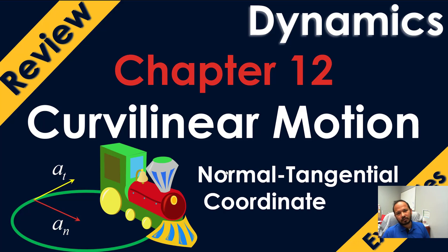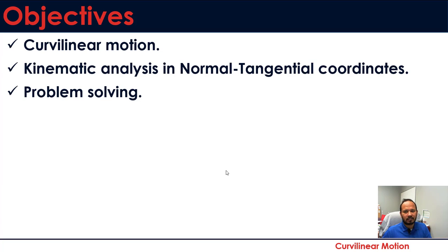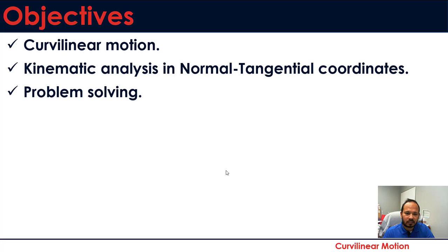Hello friends, today we're going to cover the normal-tangential coordinate system of curvilinear motion analysis. Our learning objective is to perform kinematic analysis using the normal and tangential (NT) coordinate system, understand when to apply it — since we've already learned rectangular and will also cover polar/cylindrical — and solve a fundamental problem.